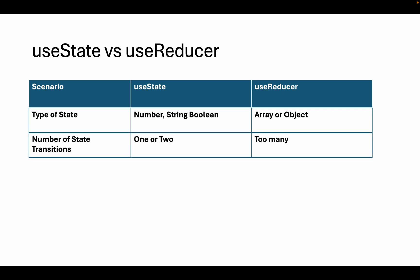Secondly, consider the number of state transitions. If you have one or two transitions in your state, it's better to go with the useState hook. In case of many transitions, it's better to go with the useReducer hook.